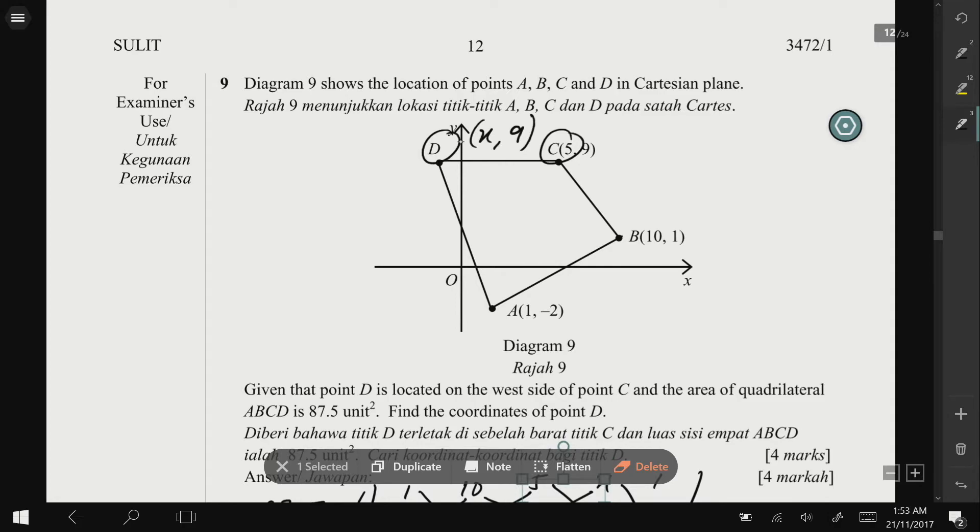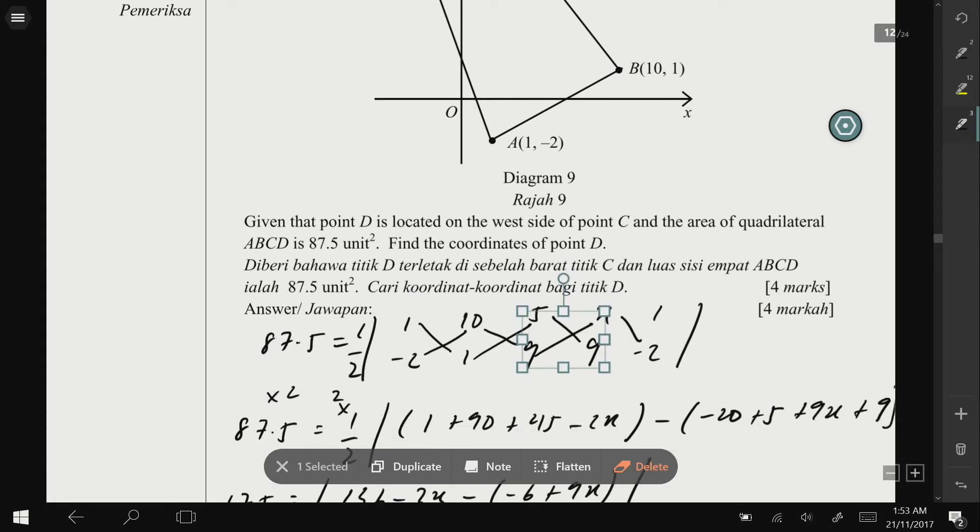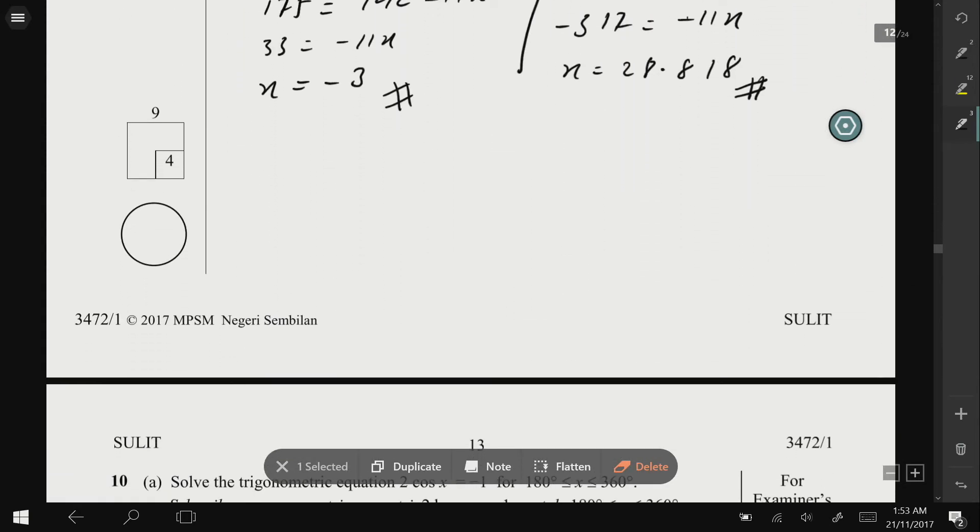Because x here is on the left side of the Cartesian plane, so the answer here is -3, not this value.